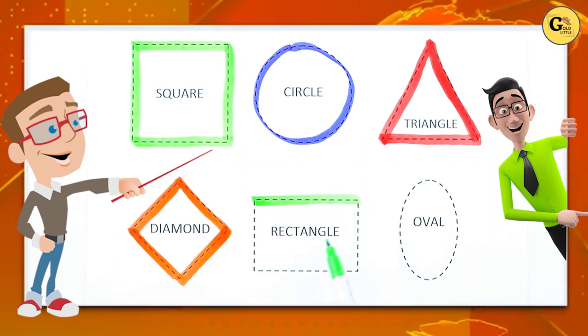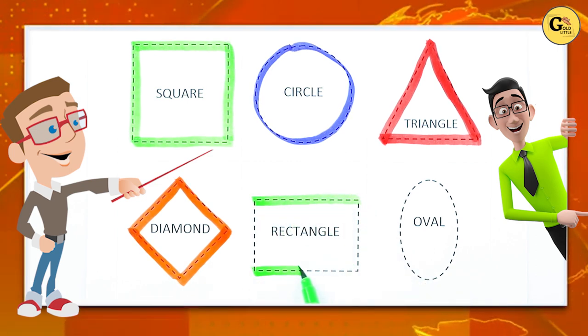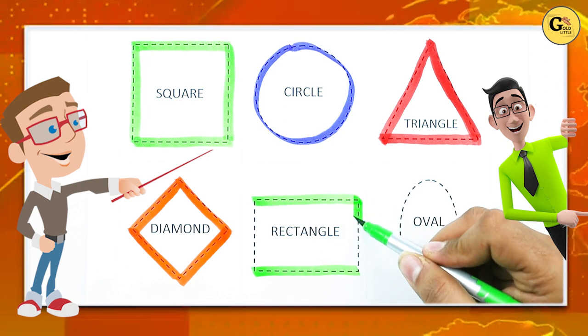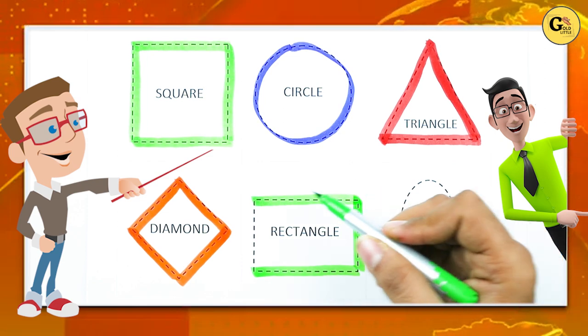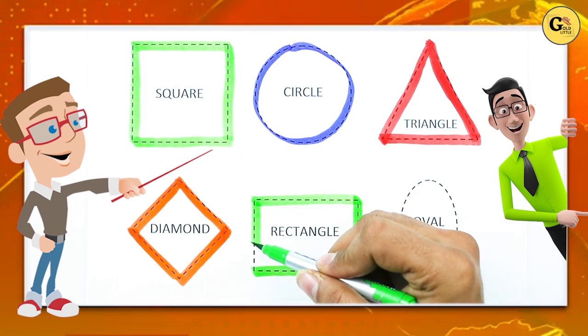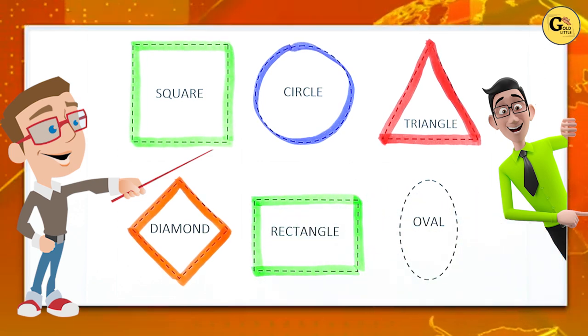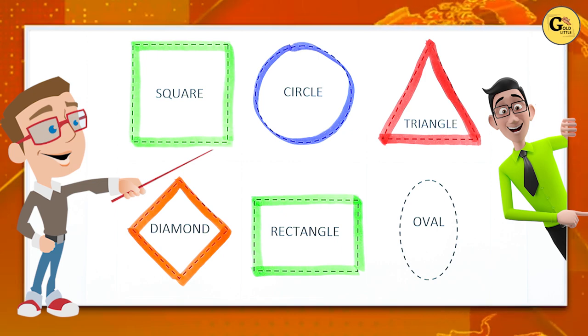One slipping line, two slipping line, one standing line, one standing line. It's a rectangle with green color.